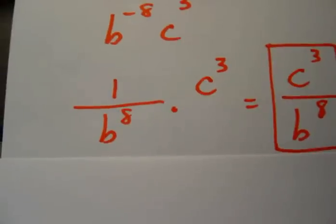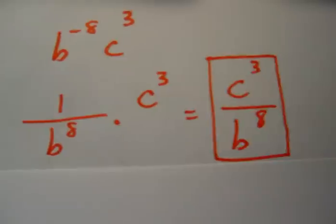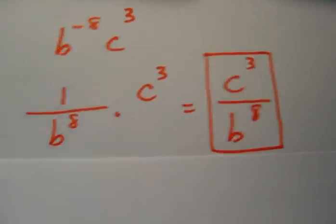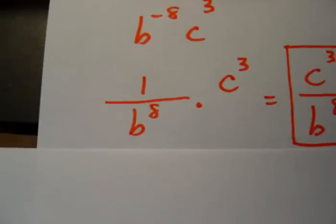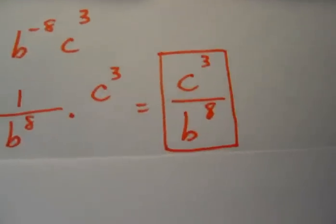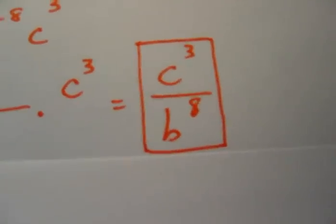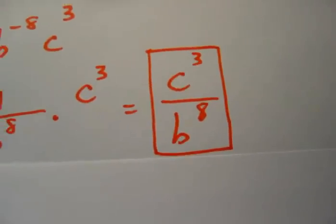We're going to multiply those across. 1 times c to the 3rd power is c to the 3rd power, and you still have your b to the 8th in the denominator. So we have c to the 3rd power divided by b to the 8th. That is your final answer.